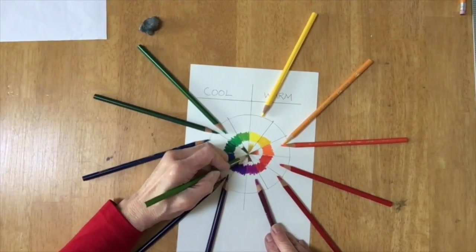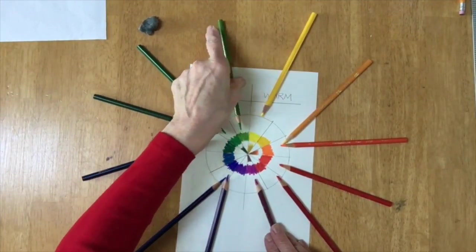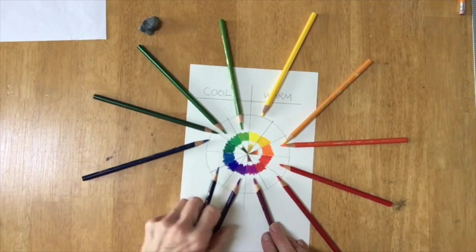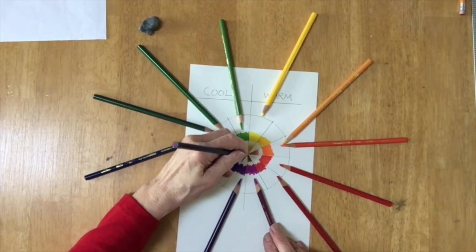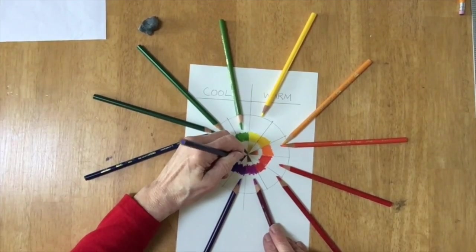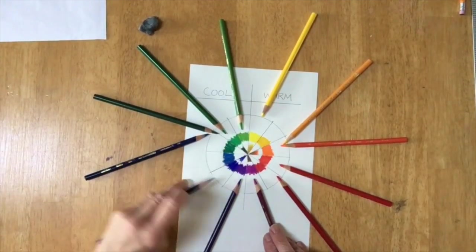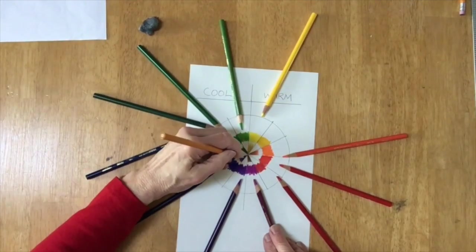You may not intuitively have thought green would be a color to use in a red apple, but green will help neutralize the red, make it a little bit darker, and help give volume to that three-dimensional apple that you're drawing.